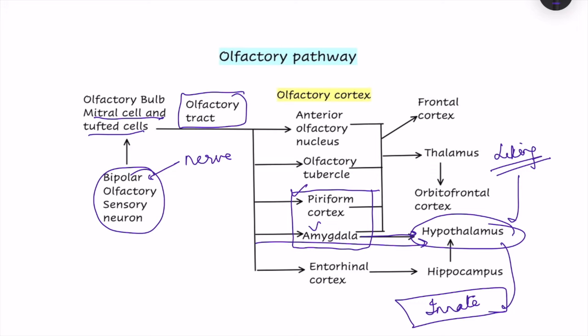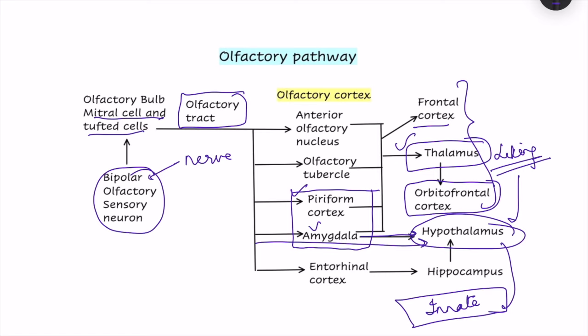Finally, a newer olfactory pathway passes through the anterior olfactory nucleus and olfactory tubercle, then via the thalamus — specifically the dorsomedial thalamic nucleus — to the orbitofrontal cortex or directly to the frontal cortex. This newer pathway is important for conscious perception of odor and analysis of odor type and strength.